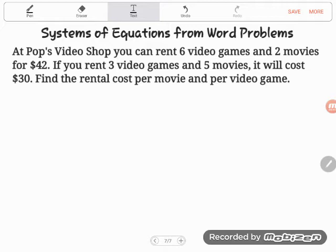It says at Pop's Video Shop, you can rent six video games and two movies for $42. If you rent three video games and five movies, it will cost you $30. And then notice it says find the rental cost per movie and per video game. There's two things we're finding. Two unknowns, two things that we don't know.